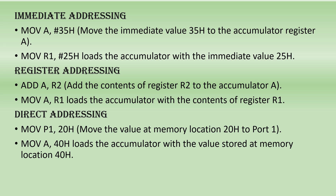This constant value is included directly in the instruction. The hash (#) symbol is used to indicate immediate data, meaning this constant value is to be immediately moved to the register. For example, the DPTR (data pointer) points to an external data memory location. The value 35h is immediately moved to the accumulator A, and 25h is immediately moved to register R1. You can use any general-purpose register R0 through R7.